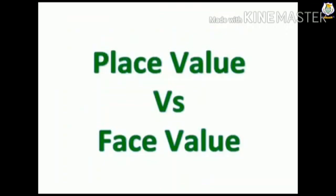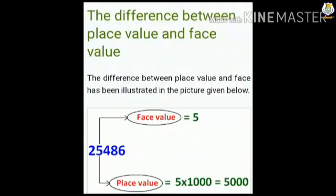Now let's see the difference between place value and face value. The difference between place value and face value has been illustrated in the picture given below. Here in number 25486, we have to find out the place value and face value of digit 5. So the face value of 5 is 5 and the place value of 5 is 5000.